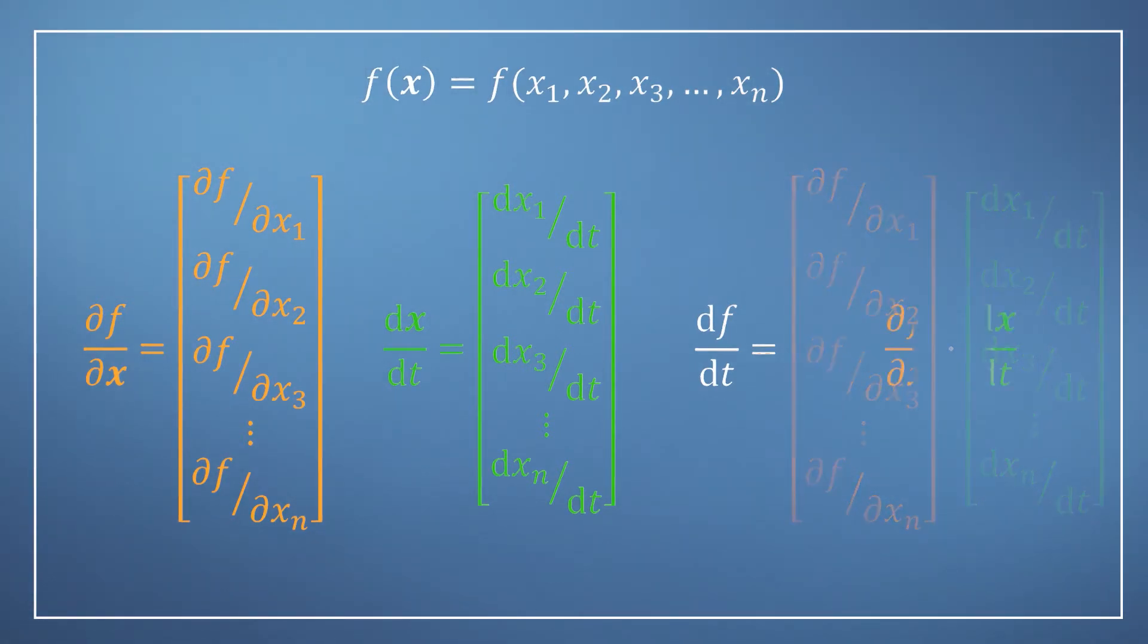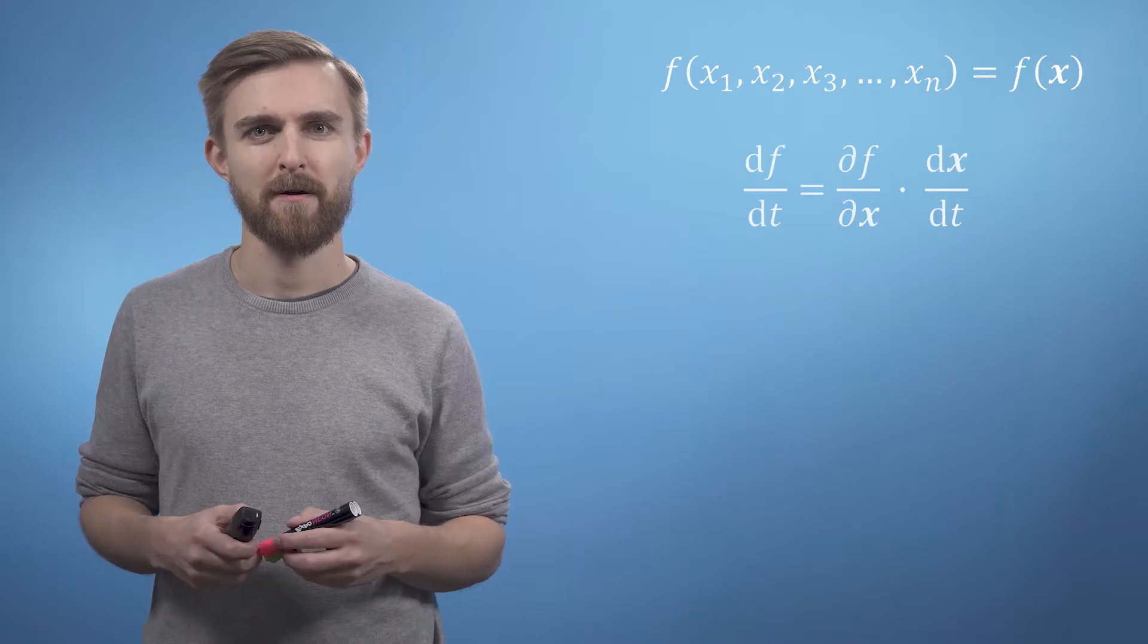But there is no need for us to write out these vectors in full. So, we can simply write the dot of our two multivariable derivative expressions. And that's it.